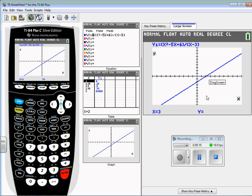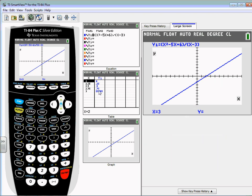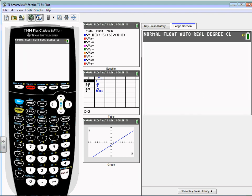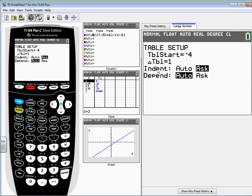What we need to do is find some way on the calculator to prove what we just did algebraically. The best way to do that is to go to our window - I'm going to go to second window, which is the table setup, and make sure that your independent is on Ask. That's going to allow us to put in whatever values we want for x.